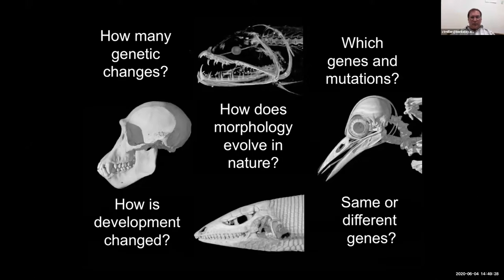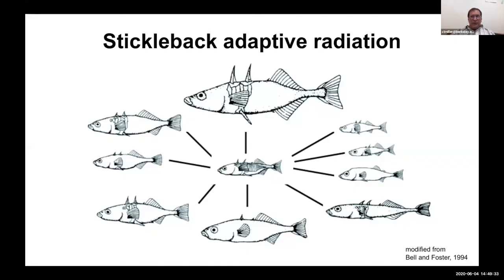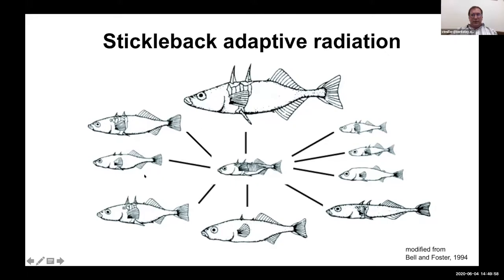The vertebrates shown in those skulls are tough genetic model systems. To answer these questions, we've been using this small fish called the three-spined stickleback. Its life cycle is shown here. This species has an unusual life cycle in that in both the Pacific and Atlantic Ocean, there are very large populations of oceanic fish that colonize new freshwater environments.